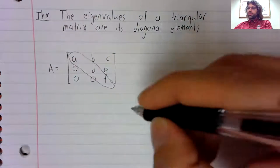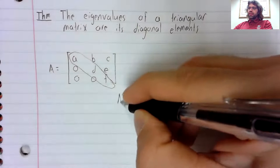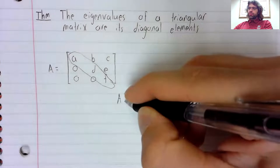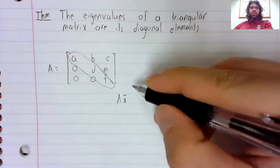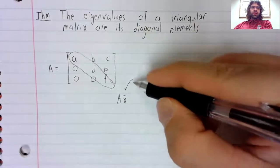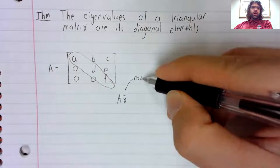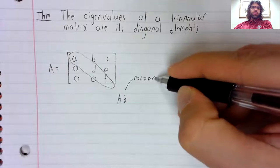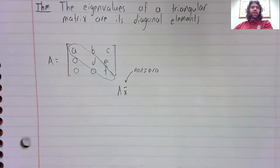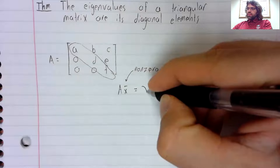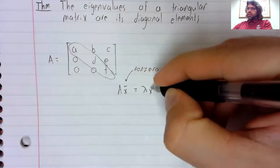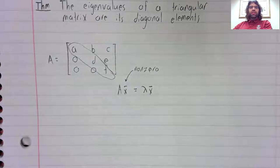So remember that to be an eigenvalue, there has to be a non-zero vector x such that Ax equals lambda x.